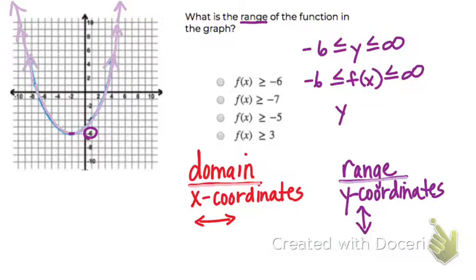So y is greater than or equal to negative 6. And instead of y, you can use f(x). So the answer would be this first choice, f(x) ≥ -6.